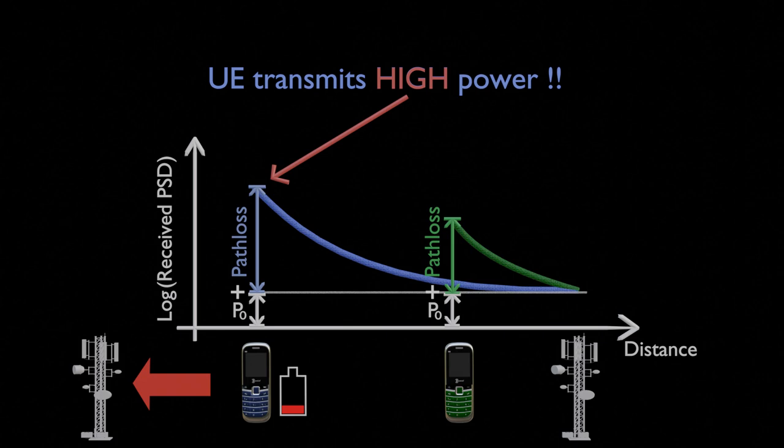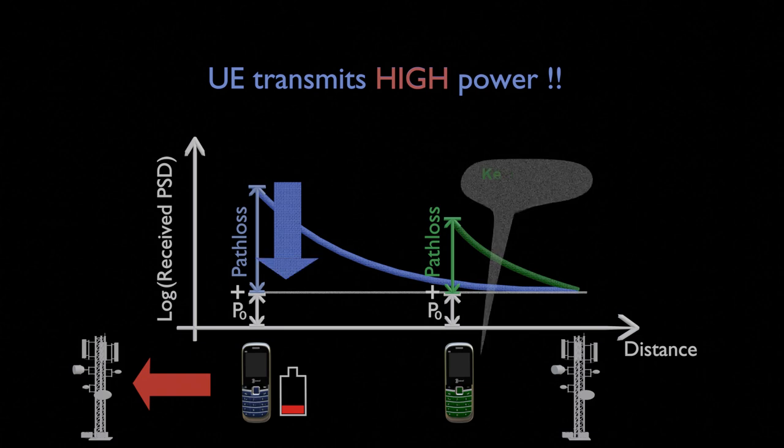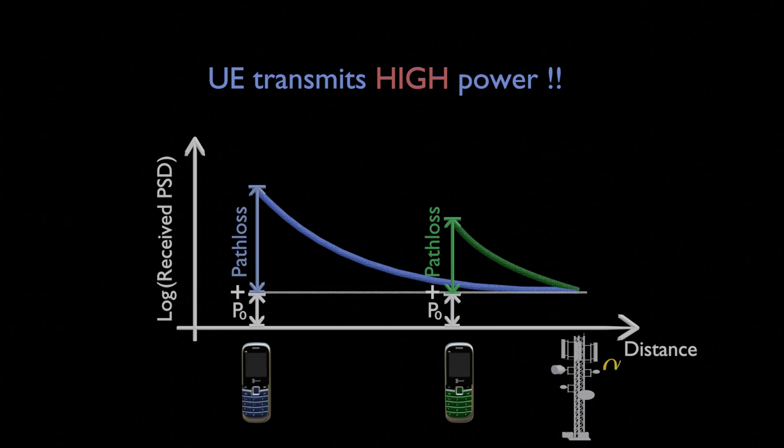To fix this problem, the base station can ask the faraway UE to lower its power while keeping the nearby UE's power roughly the same. But the base station doesn't want to send individual power reduction commands to every UE because that would create too much control overhead. Instead, it uses a simpler approach by sending a single parameter called alpha to each UE. Each UE then multiplies alpha with the path loss when calculating its transmit power. This way, faraway UE's power is reduced more than that of nearby UE's.